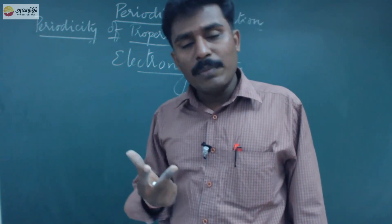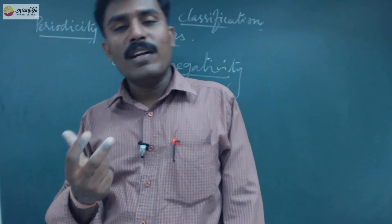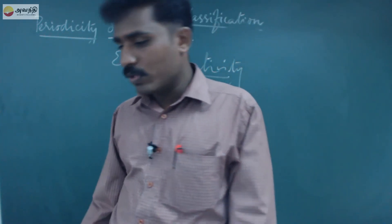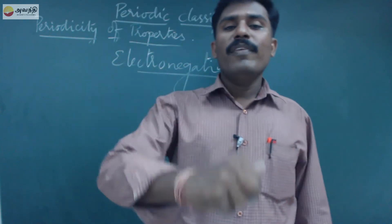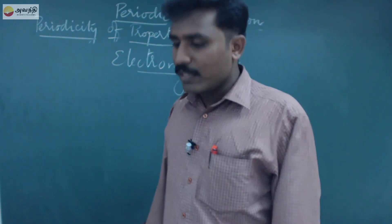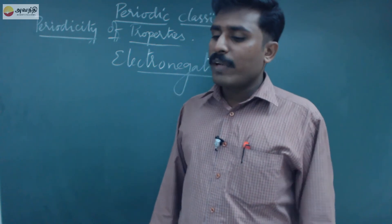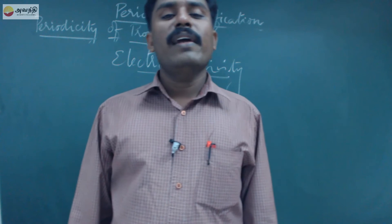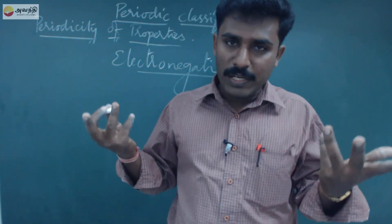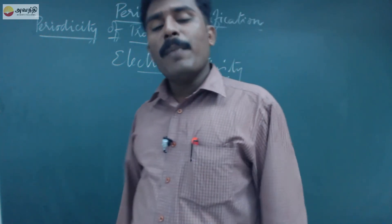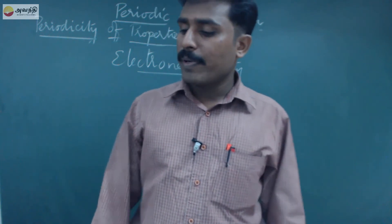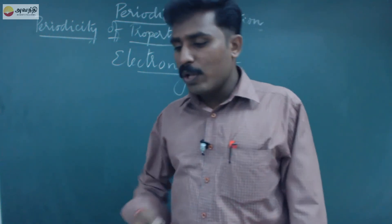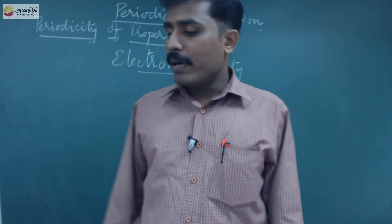Electronegativity, on the other hand, is the relative tendency of an atom in a molecule to attract a shared pair of electrons towards itself. Electron affinity is expressed and measured in electron volts per atom, kilocalories per mole, or kilojoules per mole. But for electronegativity, there is no unit — it is only a number. Electron affinity is a property of an isolated atom; electronegativity is a property of a bonded atom.